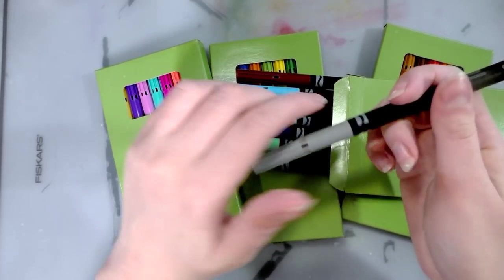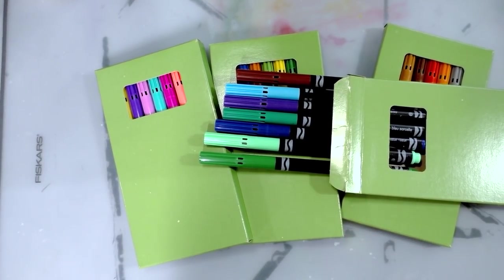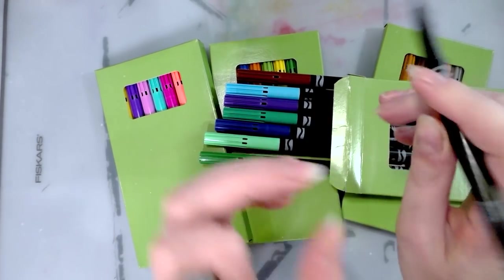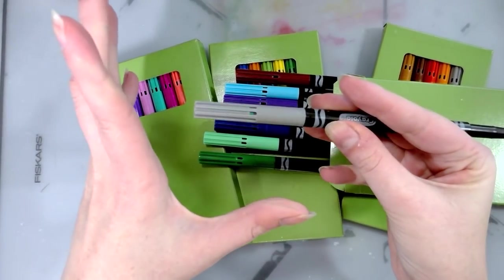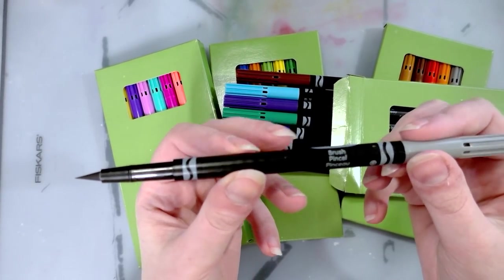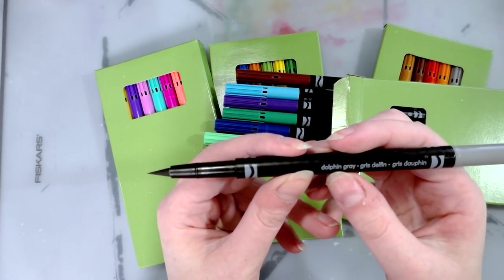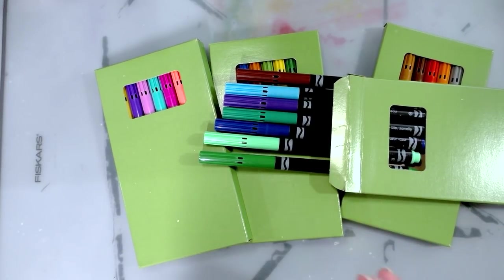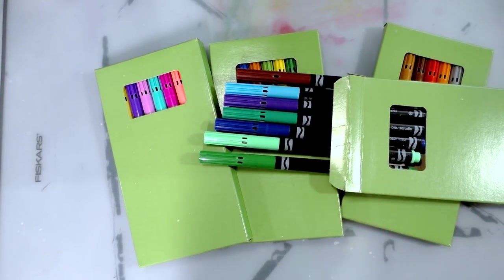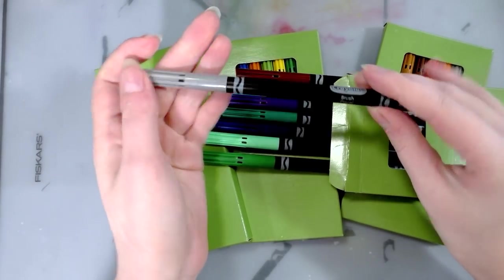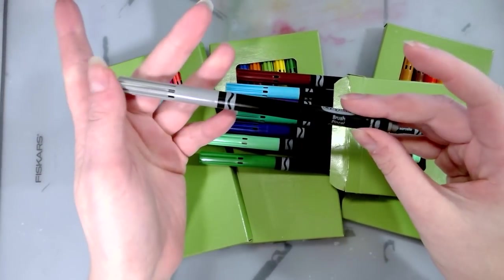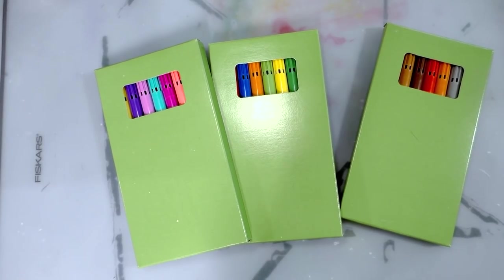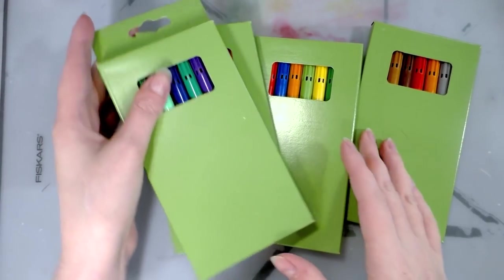It has a ventilated cap which is important, just in case you have kids playing with these. A little hard to uncap. Nice brush tip, we'll check that in a minute. And then the back where you can post it, the color name is on here. It's dolphin gray, gris dolphin. I like that they have multiple languages. I wish that had been a thing when I was a kid. So we have 32 of these and I'm going to swatch them by set.